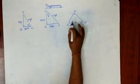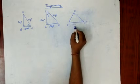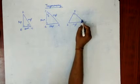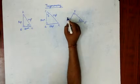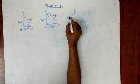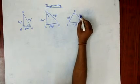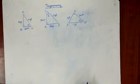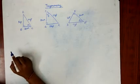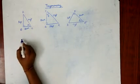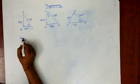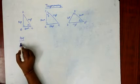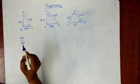Sorry, DF is the hypotenuse. Selecting an angle theta, the opposite side is the perpendicular and the remaining side is called the base. Now we have to arrange these sides as ratios: perpendicular upon hypotenuse.